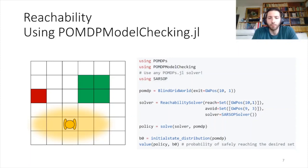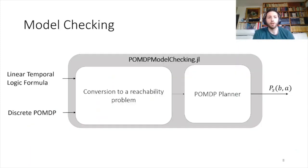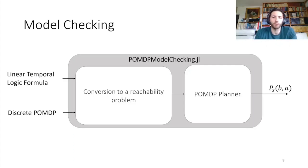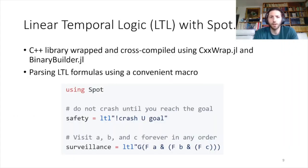This is a reachability problem, which is a specific case of model checking. Model checking is interested in other types of objectives specified by a linear temporal logic formula — the API will look like this. The user specifies a temporal logic formula and a POMDP model, and POMDPModelChecking.jl automatically converts this into a reachability problem, which is then solved by a POMDP planner. We provide the Spot.jl library to deal with the linear temporal logic formulas — it's a wrapper of a C++ library using CxxWrap and BinaryBuilder to provide cross-platform deployment.